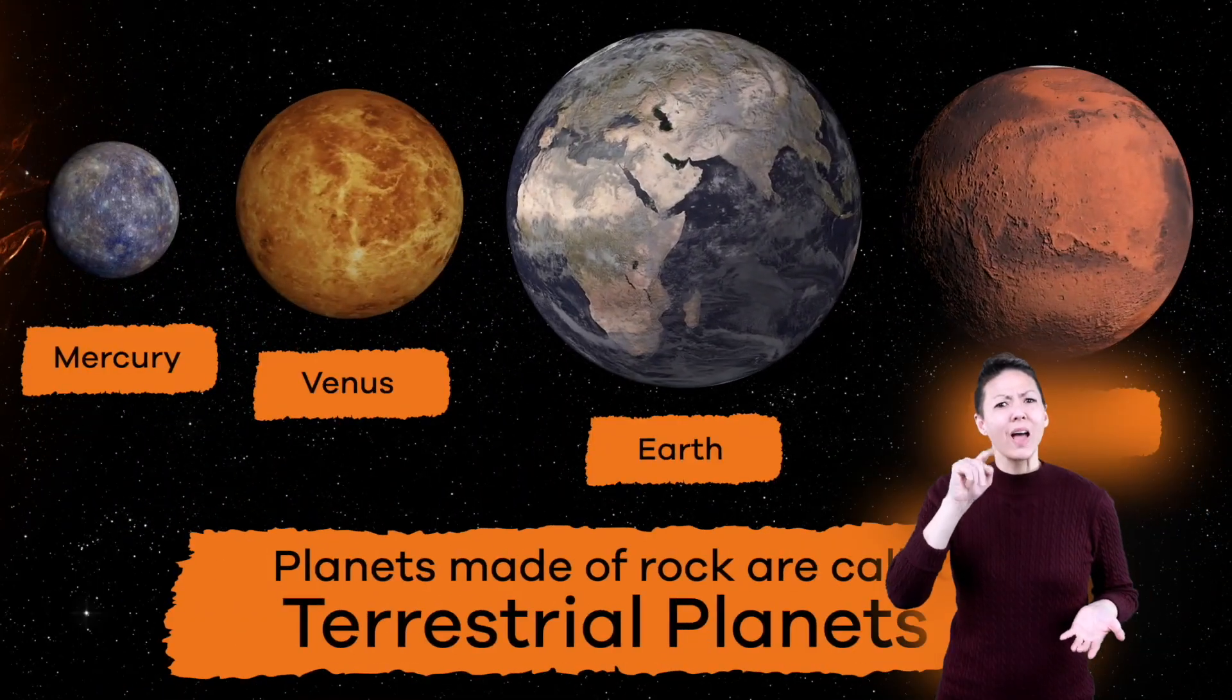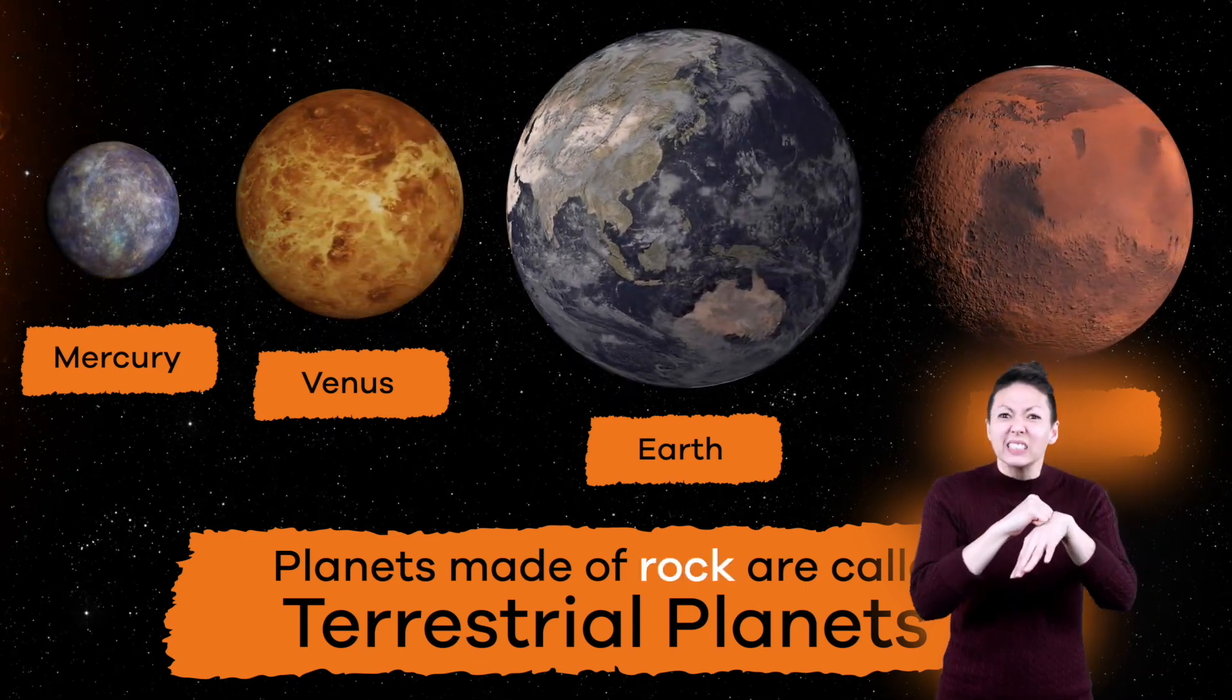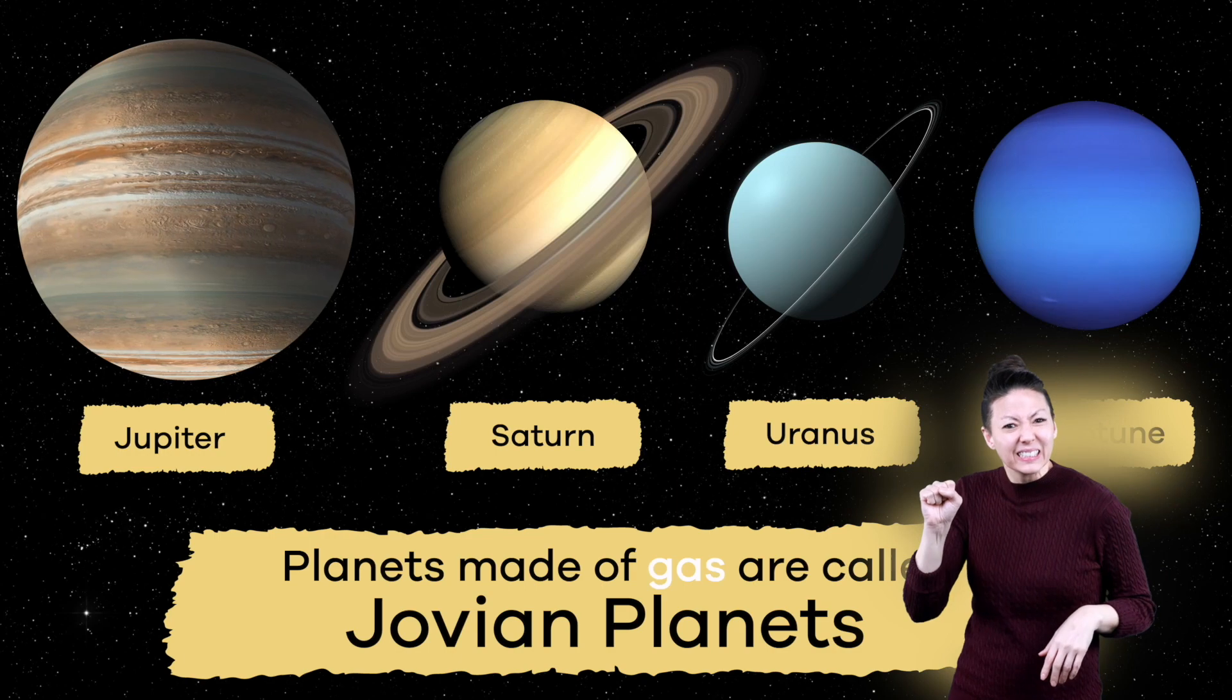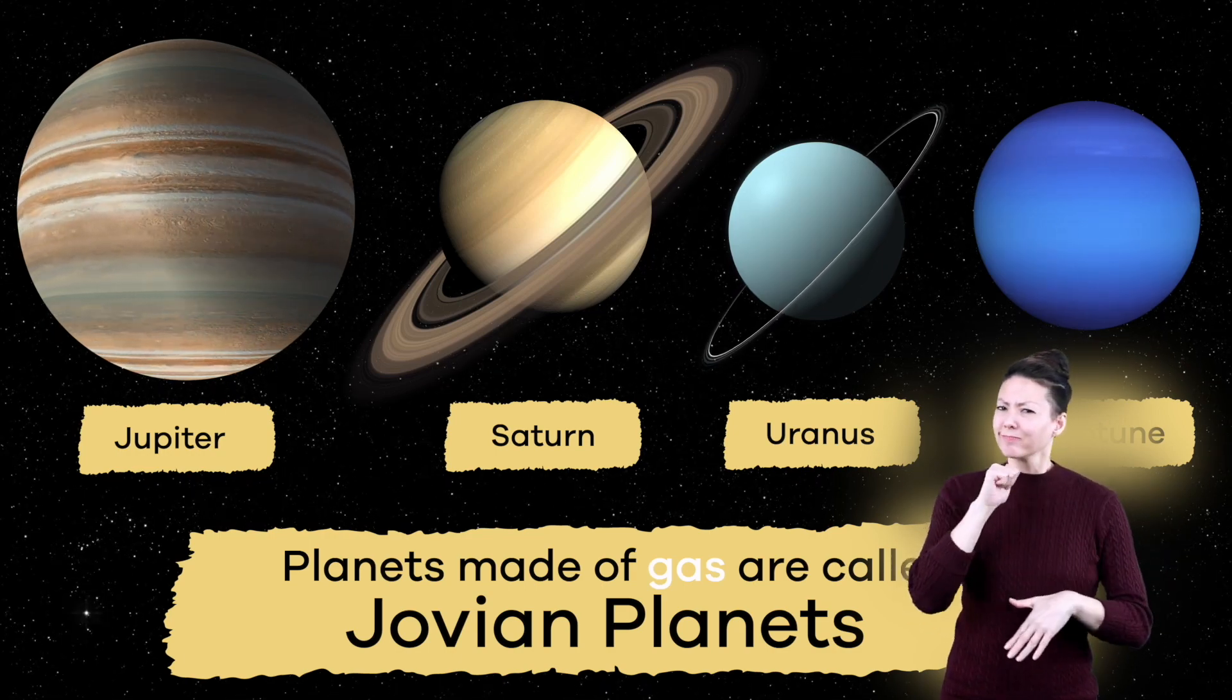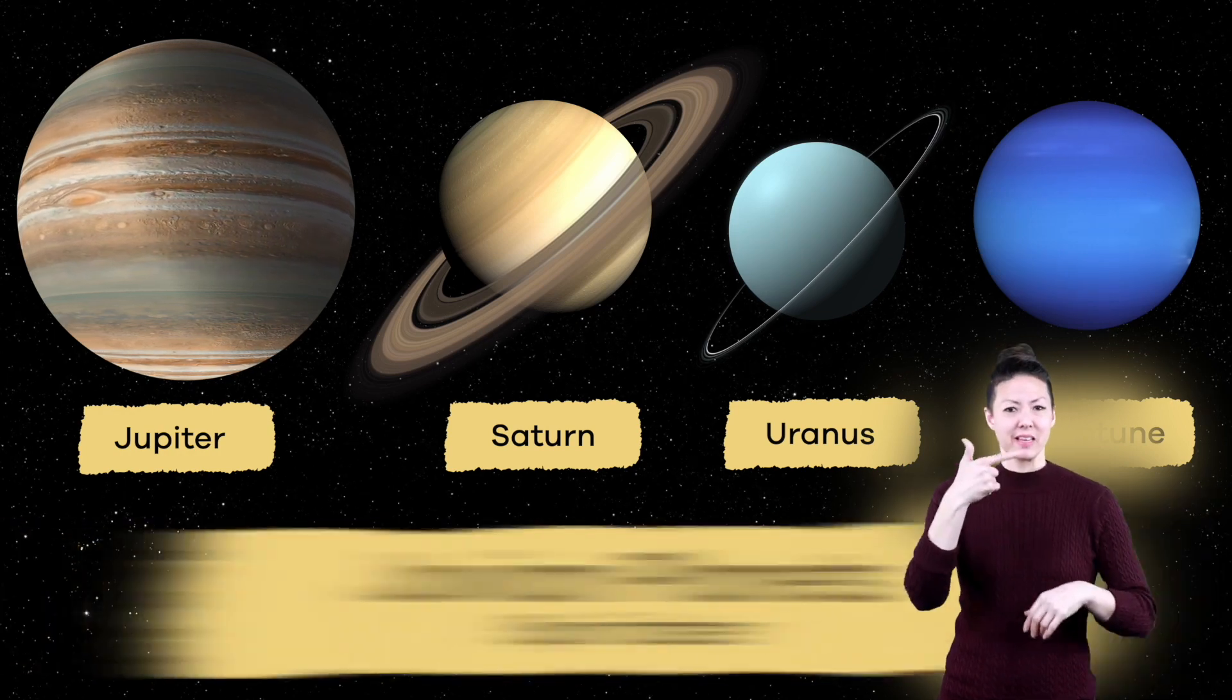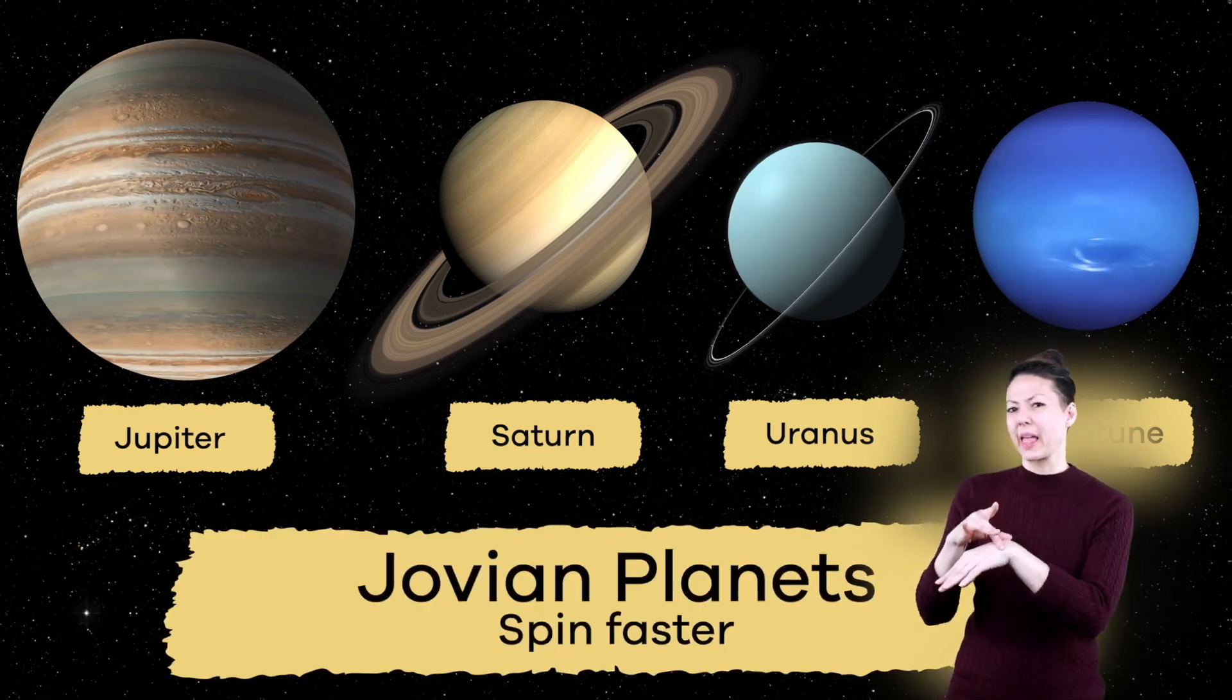Cool planet fact! Some of the planets are made of rock, while others are made of gases, which means those planets are not completely solid. The planets made of gas spin quicker than the planets made of rock.